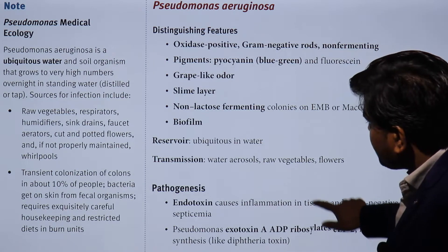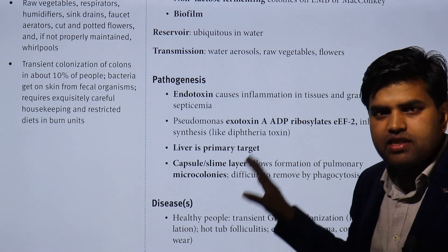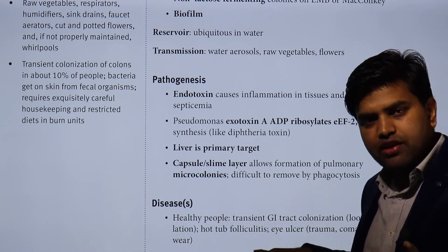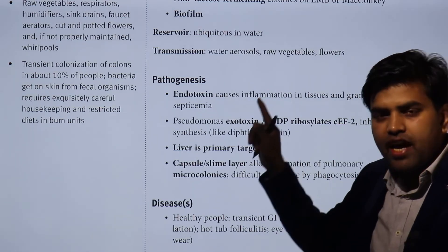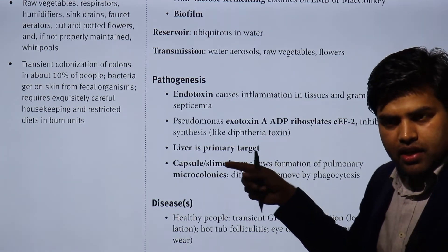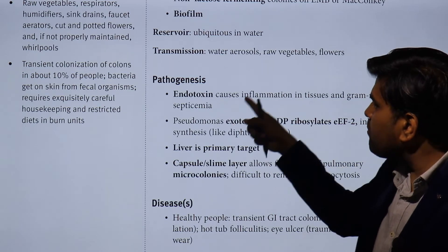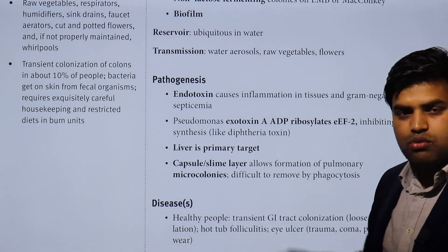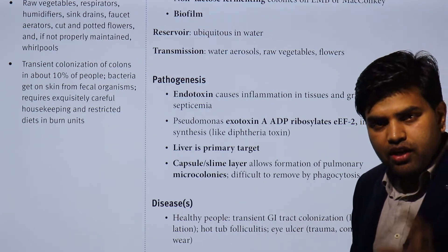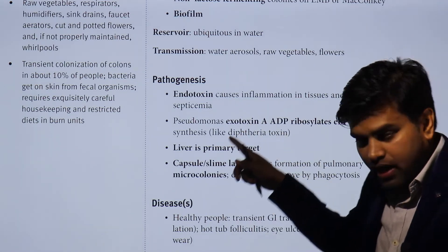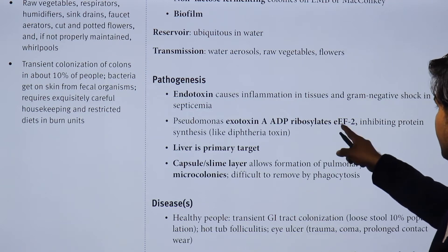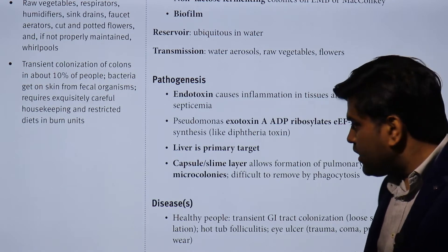Regarding pathogenesis, since Pseudomonas is a gram-negative bacteria, it produces endotoxin. Endotoxin can activate three pathways — macrophages, complement, and tissue factor — leading to DIC and shock. So endotoxin shock can be caused by this organism. Pseudomonas also possesses exotoxin. If you remember from protein synthesis inhibitors discussed previously, both diphtheria and Pseudomonas inhibit elongation factor 2, thereby inhibiting protein synthesis. Pseudomonas exotoxin A ADP-ribosylates elongation factor 2 to inhibit protein synthesis, similar to diphtheria toxin.